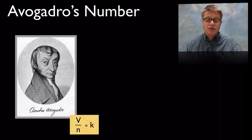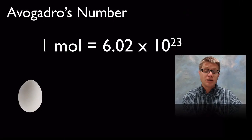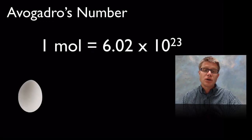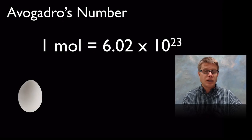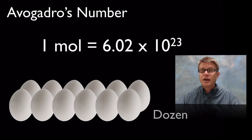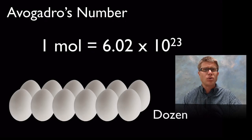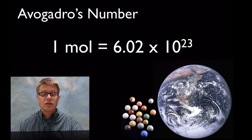Avogadro proposed that as we increase the volume of a gas, we are directly increasing the number of particles found within it — and it didn't matter what the gas was. He died before they actually quantified this idea of the mole, but we still give him credit for that early work. So 1 mole is 6.02 times 10 to the 23rd — it's just a quantity, like if you have 12 eggs you call that a dozen. A mole is just a number.